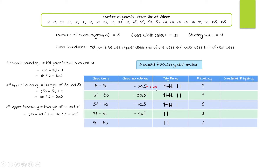The point of class boundaries is continuity — the upper boundary of one class must match the lower boundary of the next. So the lower boundaries are: 30.5, 50.5, 70.5, and 90.5. To subtract back: 90.5 minus 20 gives 70.5, 70.5 minus the class width gives 50.5, and 30.5 minus 20 gives us the first lower class boundary of 10.5.